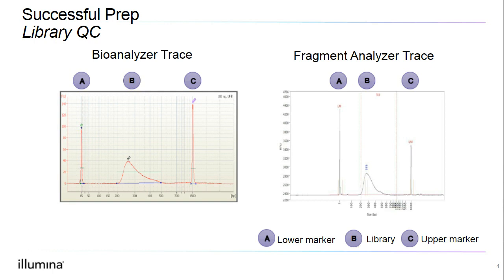We have validated our workflows with the use of the bioanalyzer or fragment analyzer from Agilent, but if we don't have these instruments, other similar instruments can work as well. Other instruments commonly used for library QC include the TapeStation, Caliper, and Kayak Cell.